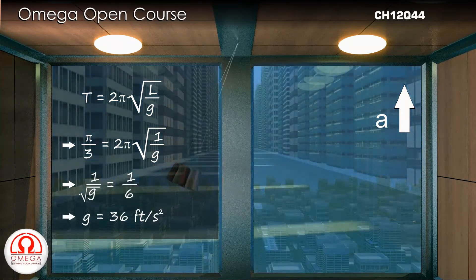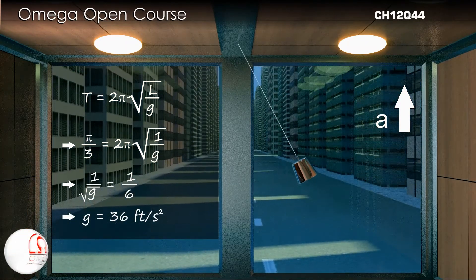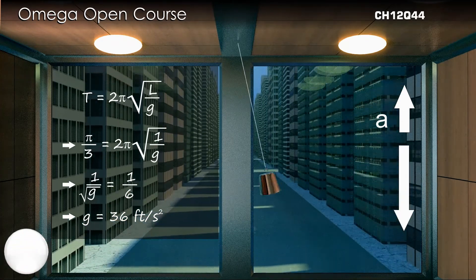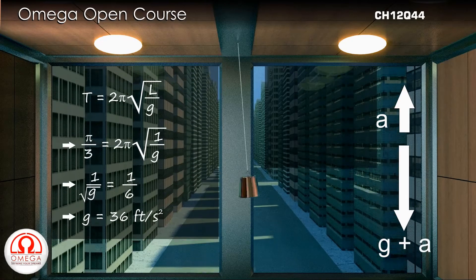If the elevator is moving upwards with acceleration a, then as is discussed in the video on equivalent gravity, the effective acceleration due to gravity in the frame of the elevator is g plus a.